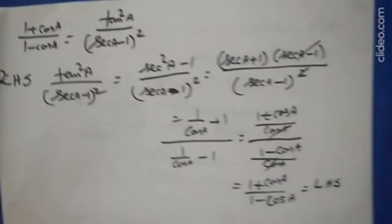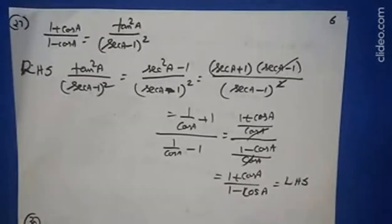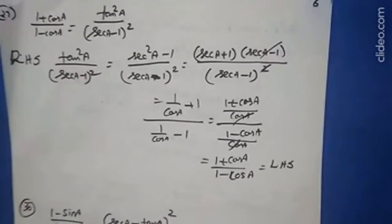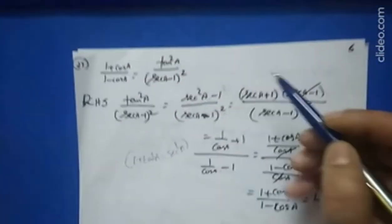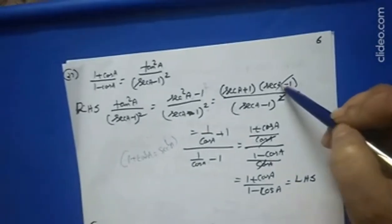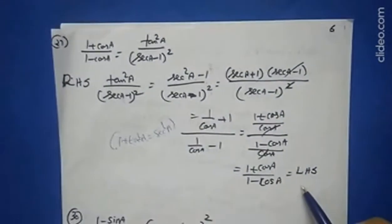Question 27: (1 + cos a)/(1 − cos a) = (sec a + 1)²/tan²a... starting from the right hand side since it is more complex. Write tan²a = sec²a − 1 = (sec a + 1)(sec a − 1), so (sec a − 1)² cancels partially, leaving (sec a + 1)/(sec a − 1). Substitute sec a = 1/cos a and take LCM: (1/cos a + 1)/(1/cos a − 1) = (1 + cos a)/(1 − cos a), which equals the left hand side.